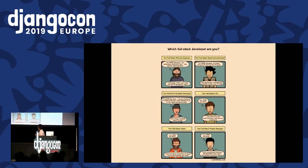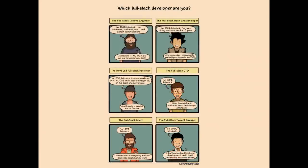What is a full stack engineer? I decided to start with a little comic from Commitstrip — it does a good summary of what full stack means. There are different types: those who are more DevOps and do some other things on the side, back-end engineers who sometimes do some CSS occasionally, and those who are front end and are occasionally forced to go into the back end.